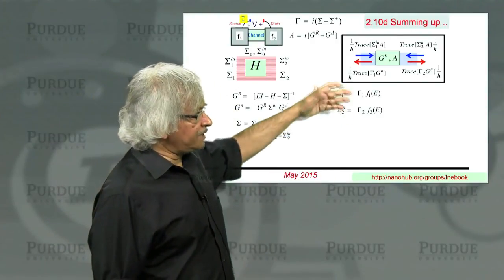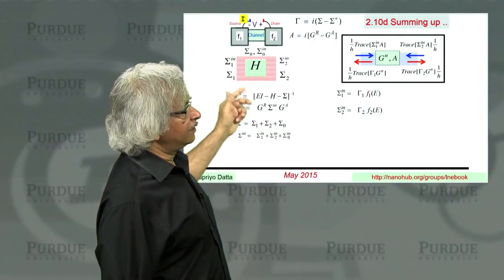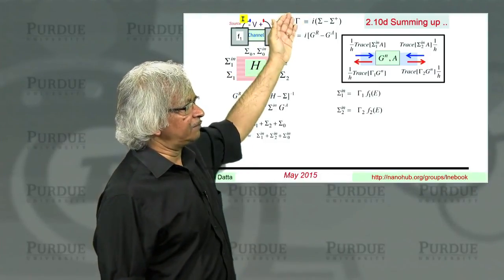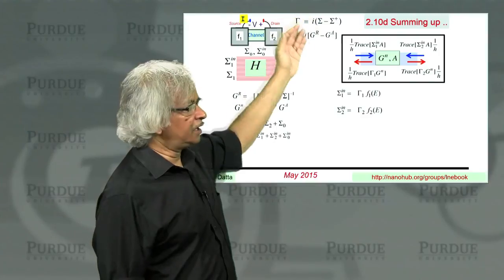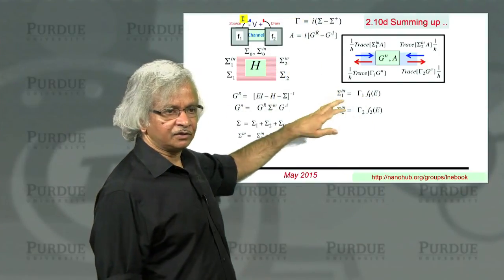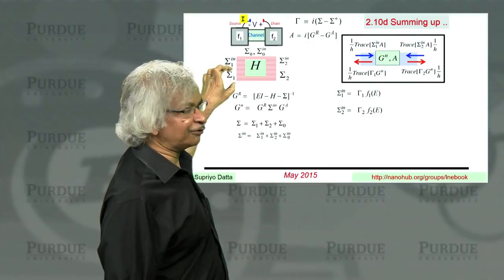For every contact, what you really need to know is sigma. If you have sigma, you have the gamma because it's the anti-Hermitian part. And if you have the gamma, you multiply it by f and you have the sigma n. So there's only one thing you need to find out, which is the sigma.